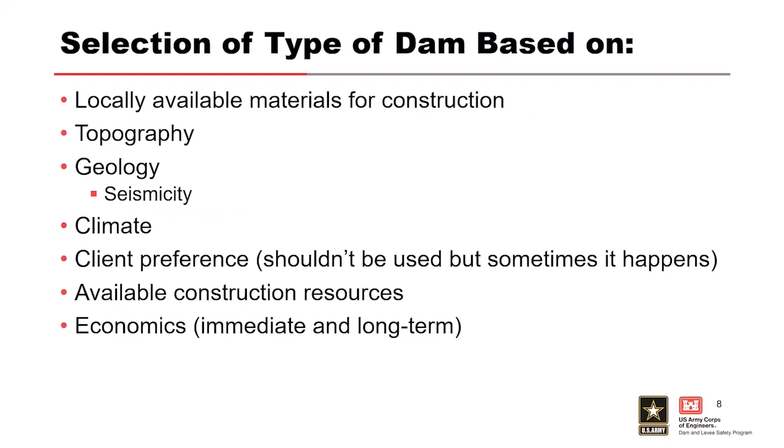Type of dam also depends on client preference — clients may have preferences on operation and maintenance, or specific capabilities. They may not want to mow the downstream slope, so you put rock on it instead if you have excess rock from excavation. Available construction resources matter too — when designing a new dam, it's better not to use specialty construction methods like slurry cutoff walls unless required, using more standard locally available methods to be more economical.